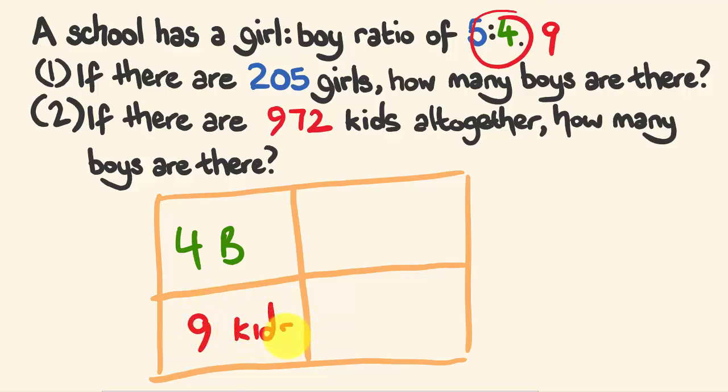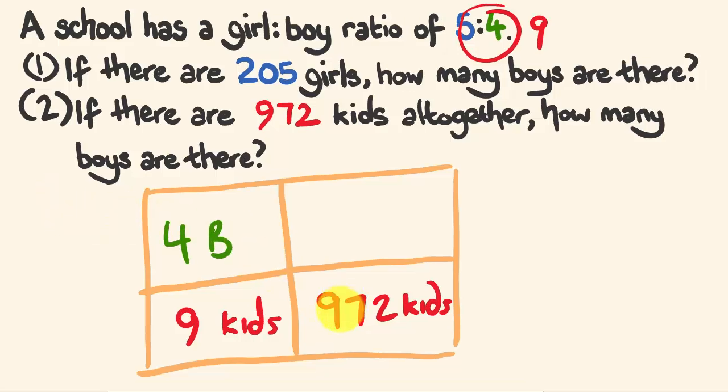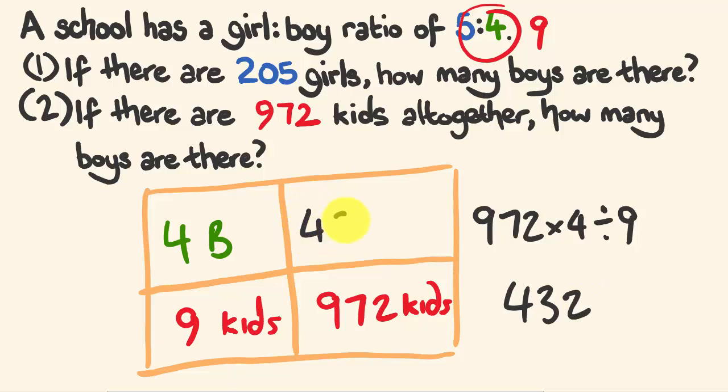Alright, so there's, for every 4 boys, there's 9 kids. Alright, so we know there's 972 kids all together. And I want to know how many boys there are. Okay, so this is fairly simple, because we're just going to now multiply 972, this diagonal's here, times 4, divided by 9. So if you're going to do that, we're going to get 432. Okay, this is 432 boys in this particular circumstance.